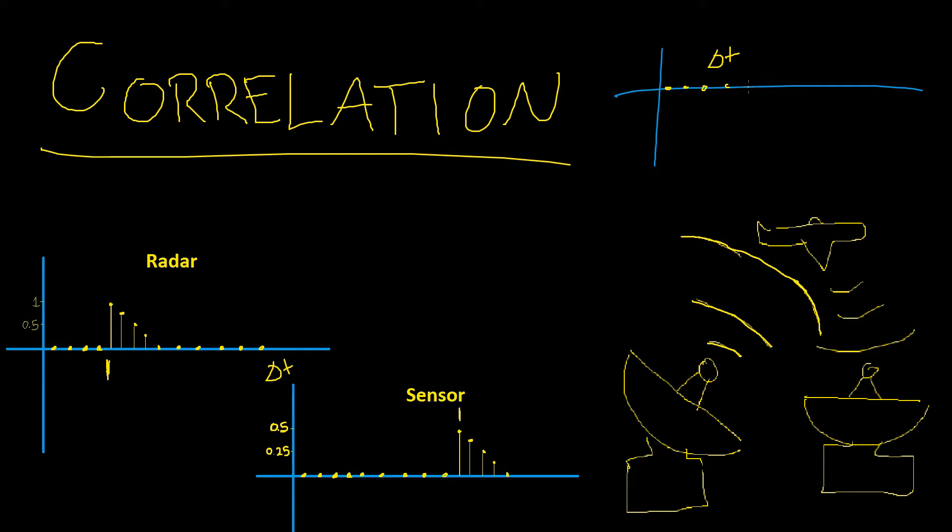When we get to delta t, there'll be a spike which will specify that there's higher correlation between the two signals at that time. The highest spike in our correlated output represents where our two signals line up the most.